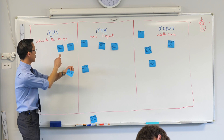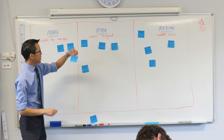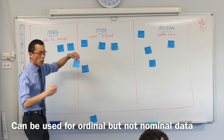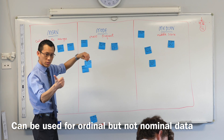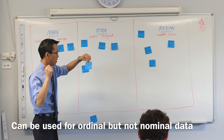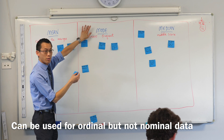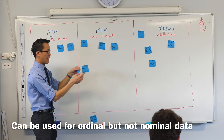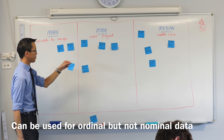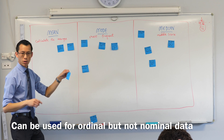Here's one, and this relates to this categorical data thing. This one says can be used for ordinal but not nominal data. We're looking at the mode right now. It can be used for ordinal but not nominal data.